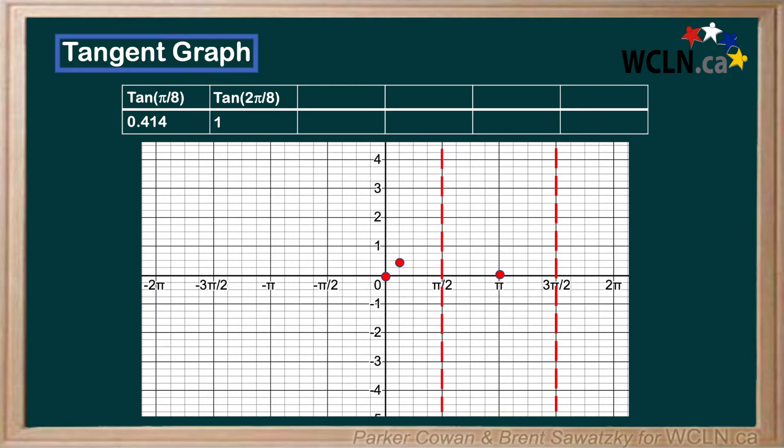Plotting along here, we have tan of 3 pi over 8, which is 2.414. It appears that the curve is exponentially growing as we approach this asymptote. Tan of 4 pi over 8 is the same as tan of pi over 2, which we already know is our asymptote.